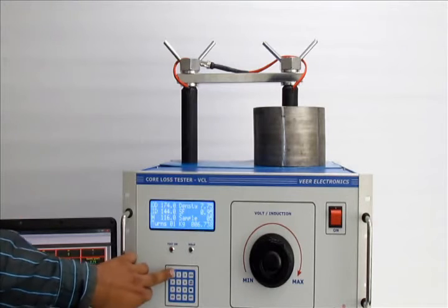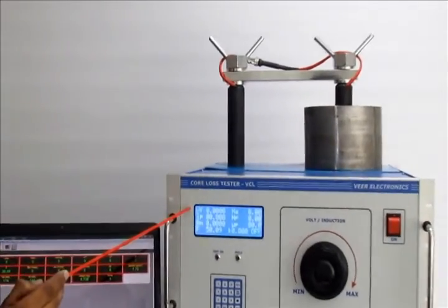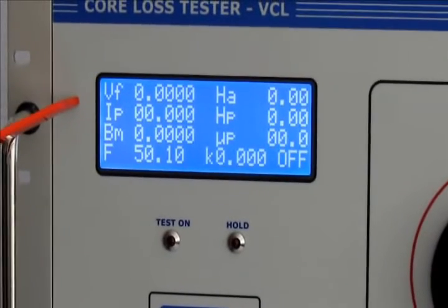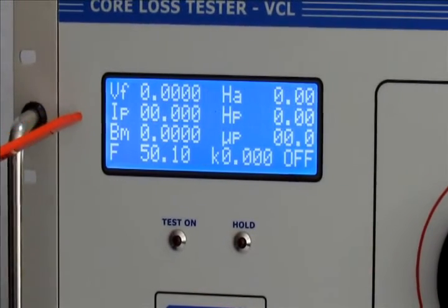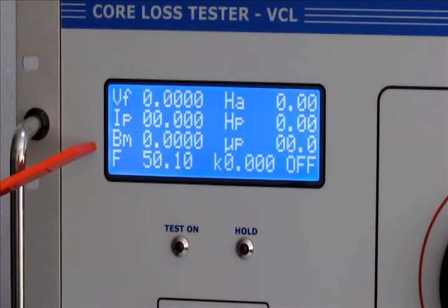This is page one of LCD display. Here you can see flux voltage VF, peak current IP, flux density in Tesla, and test frequency F.